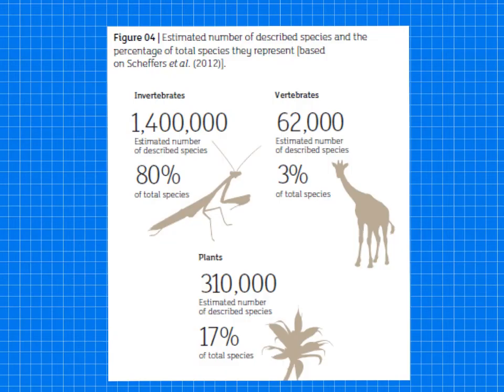Here are some of the main groups. Invertebrates account for about 1.4 million estimated species — that's 80% of the total. Vertebrates make up 62,000 described species, which is only 3%. We are part of the vertebrates. Plants account for 310,000 described species, about 17%.